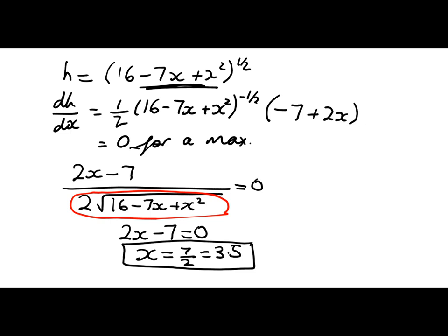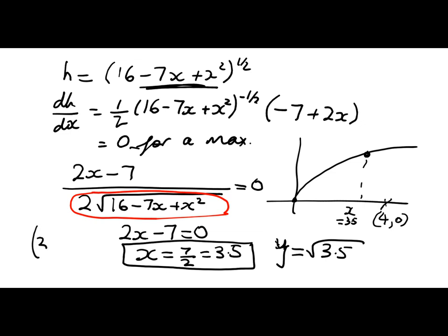But we do need to find the coordinates of the point on the curve. So let's just go back. Here's my curve. Here's (4, 0). And we've found our point here. So if x is equal to 3.5, what's y? Well, y is going to equal root 3.5, which is about 1.87. So the final answer is the point is (3.5, root 3.5) or (3.5, 1.87). So there you go.